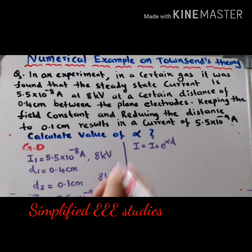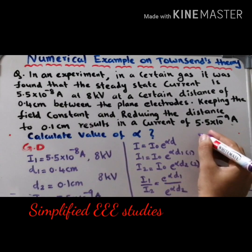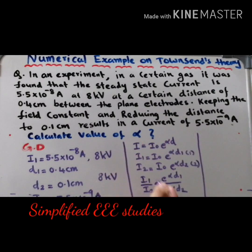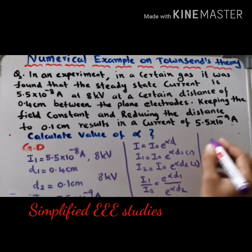Taking the ratio I1/I2, the I₀ terms cancel since they are the same value. What remains is e^(α·D1) divided by e^(α·D2). Using the rule e^M / e^N = e^(M−N), this simplifies to e^(α·(D1 − D2)). So I1/I2 = e^(α·(D1 − D2)).